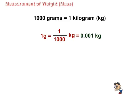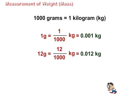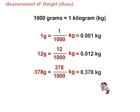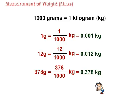Therefore, 1 gram is equal to 1 upon 1000 kilograms, which is equal to 0.001 kilograms. Similarly, 12 grams are equal to 12 upon 1000 kilograms, which is equal to 0.012 kilograms, and 378 grams are equal to 378 upon 1000 kilograms or 0.378 kilograms.